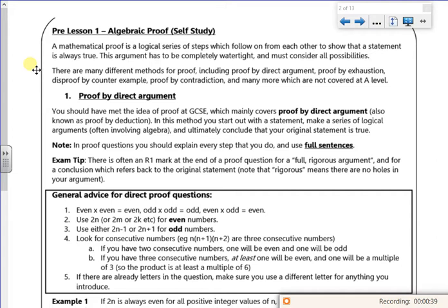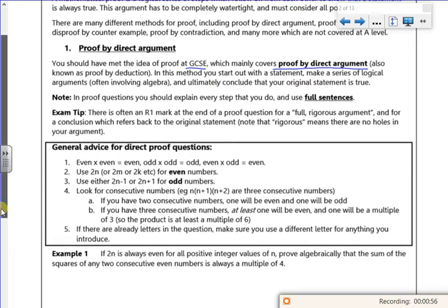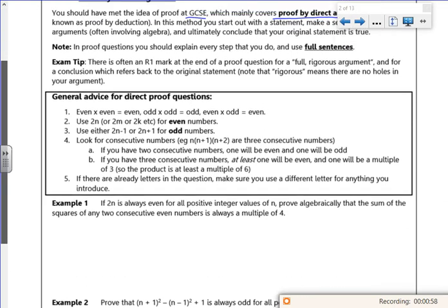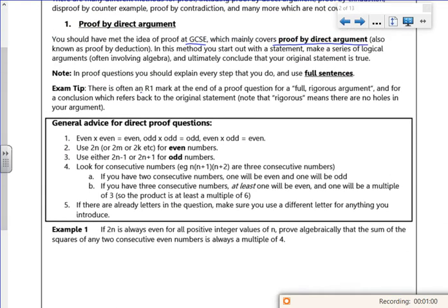So anyway, GCSE potentially did something which was proved by direct argument, which is also known as proof by deduction. We'll just do some algebra and hopefully get to the right answer. So it tells you you've got to try and use full sentences to explain how it goes. So an armor is from a full rigorous argument.